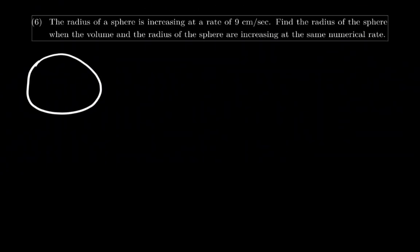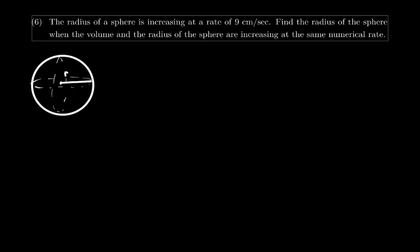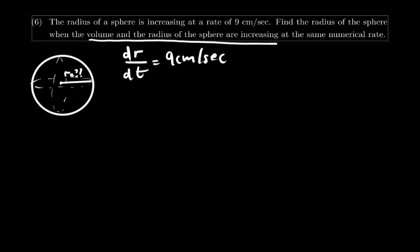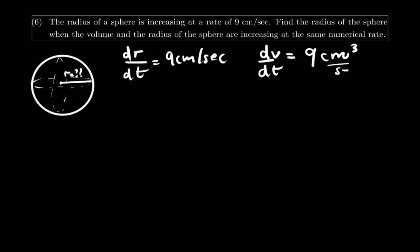Question number 6: for a sphere, the radius increases at 9 cm per second. The volume and the radius are increasing at the same numerical rate, so dV over dt also equals 9 — but since this is volume, the unit is centimeter cubed per second. We need to find the radius. The volume of a sphere equals 4 pi r cubed divided by 3.